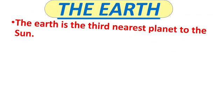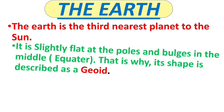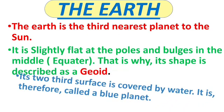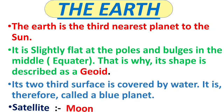Our Earth is the third nearest planet to the sun. It is slightly flat at the poles and bulges in the middle, that is at the equator. That's why its shape is described as a geoid. Two-thirds of its surface is covered by water, which is why it is called the blue planet. The Moon is the satellite of Earth.